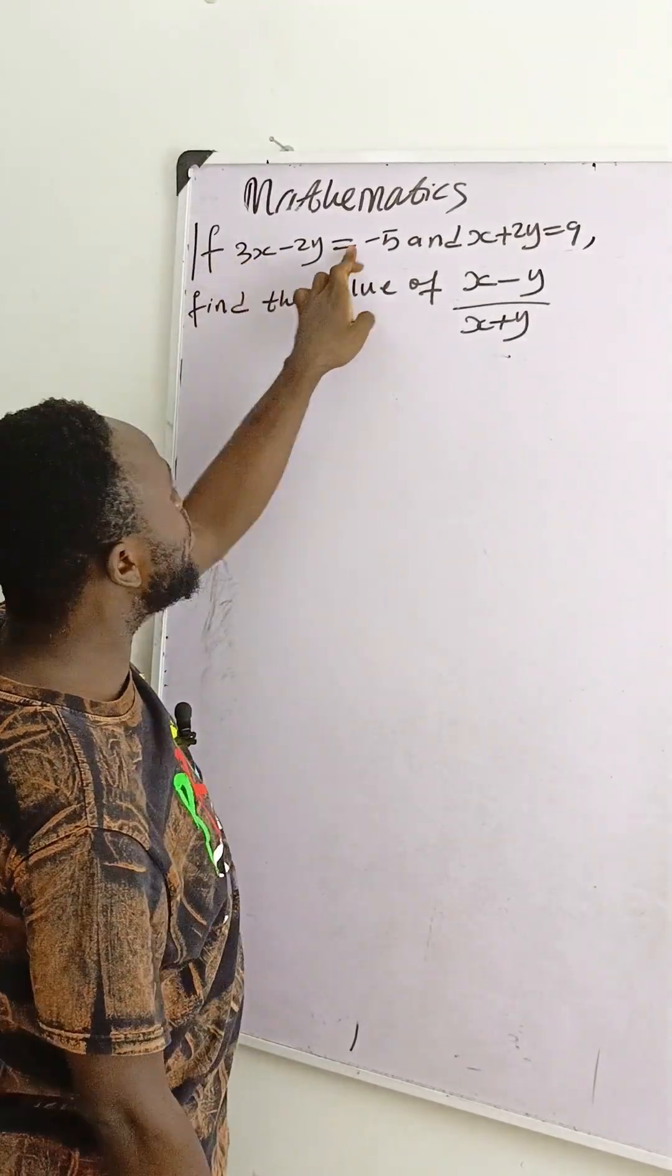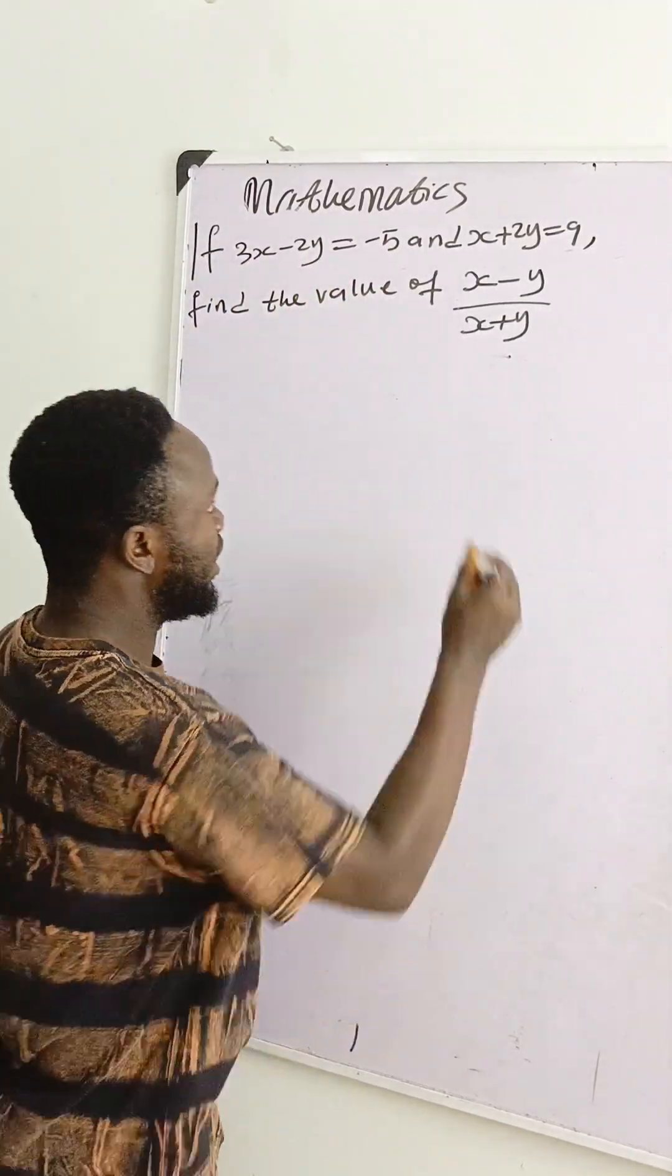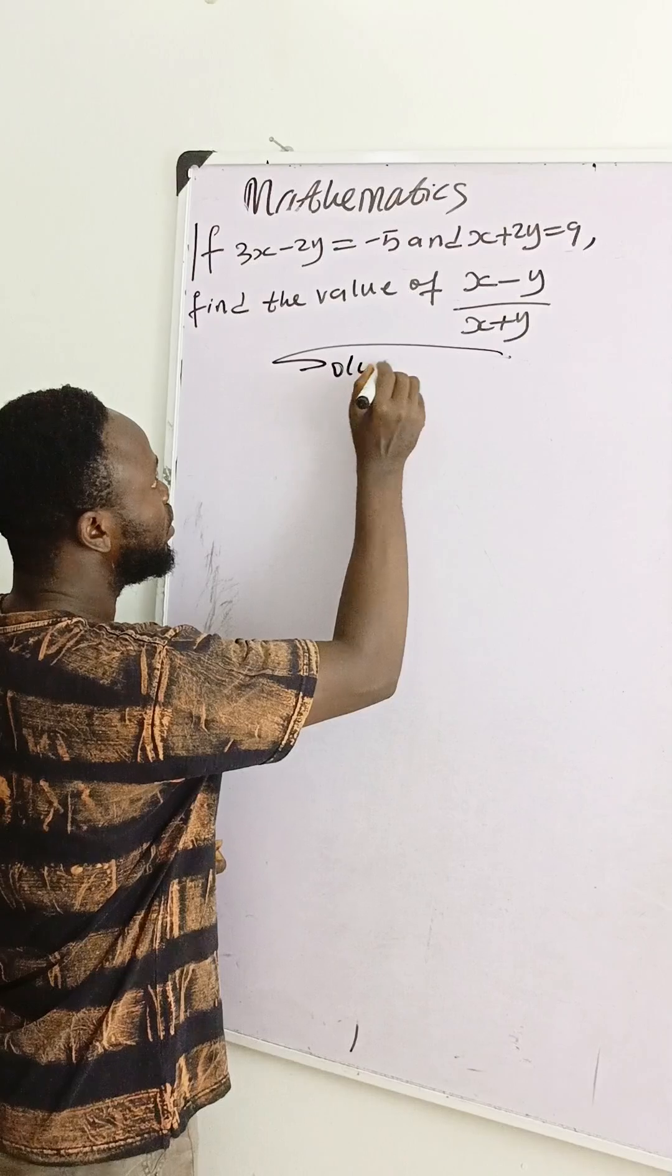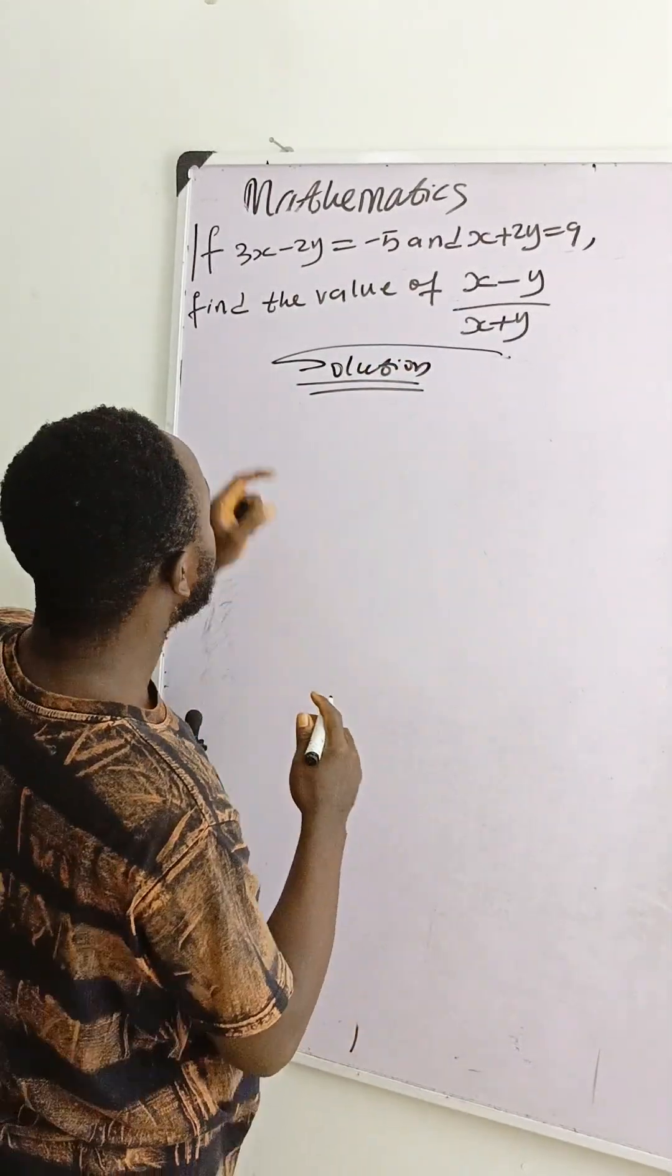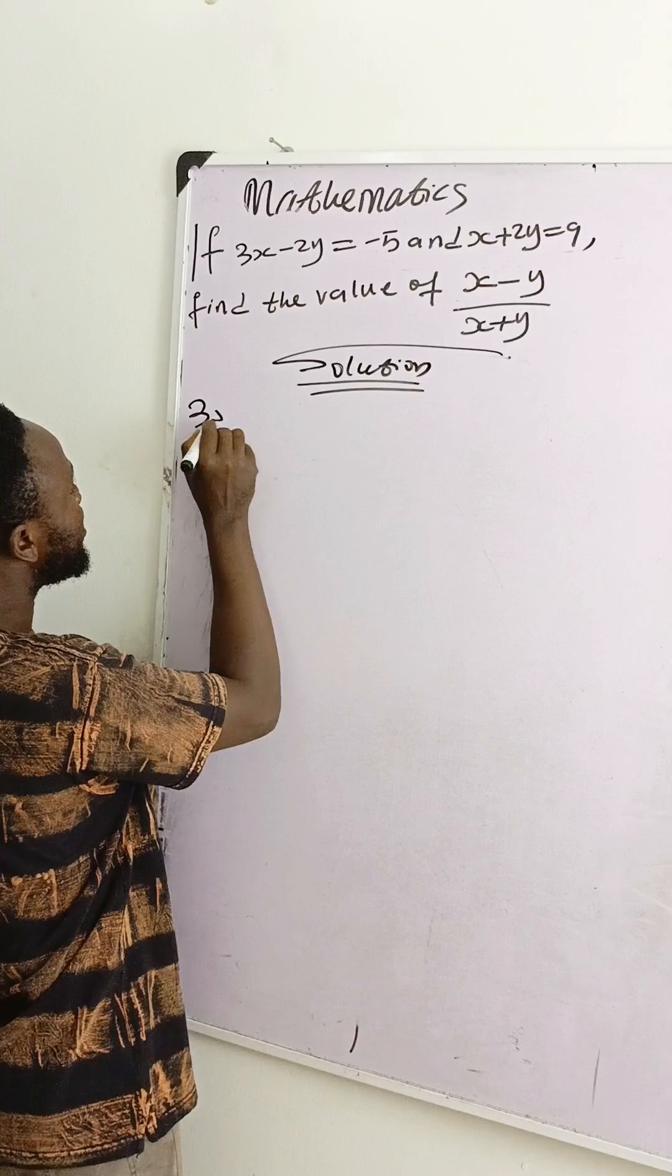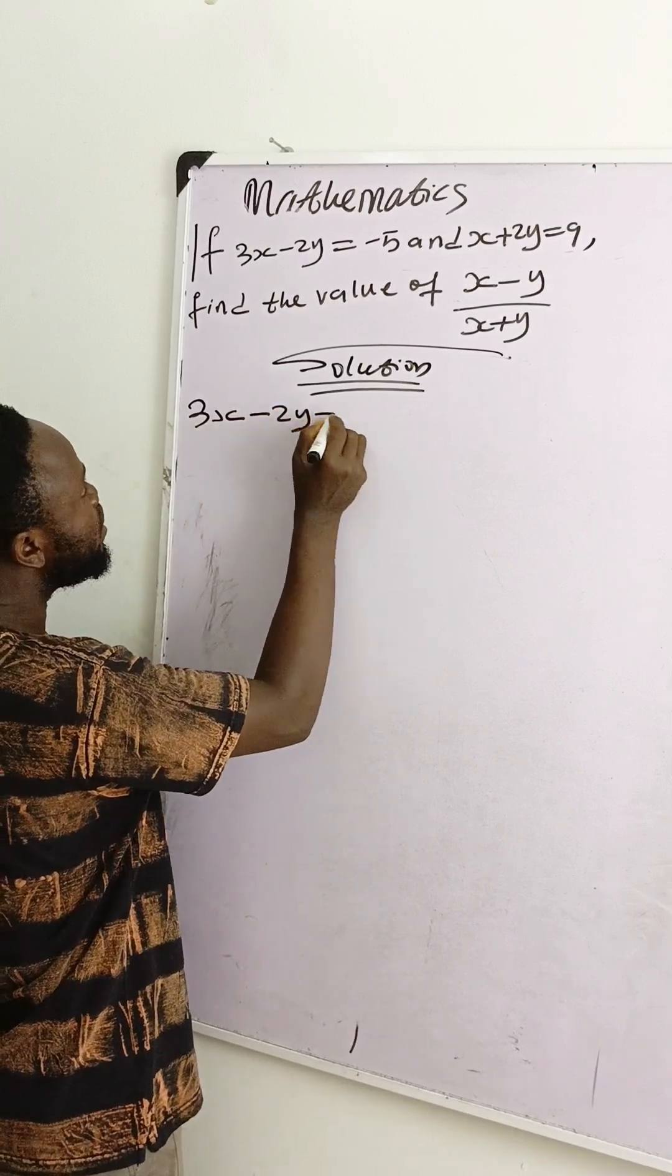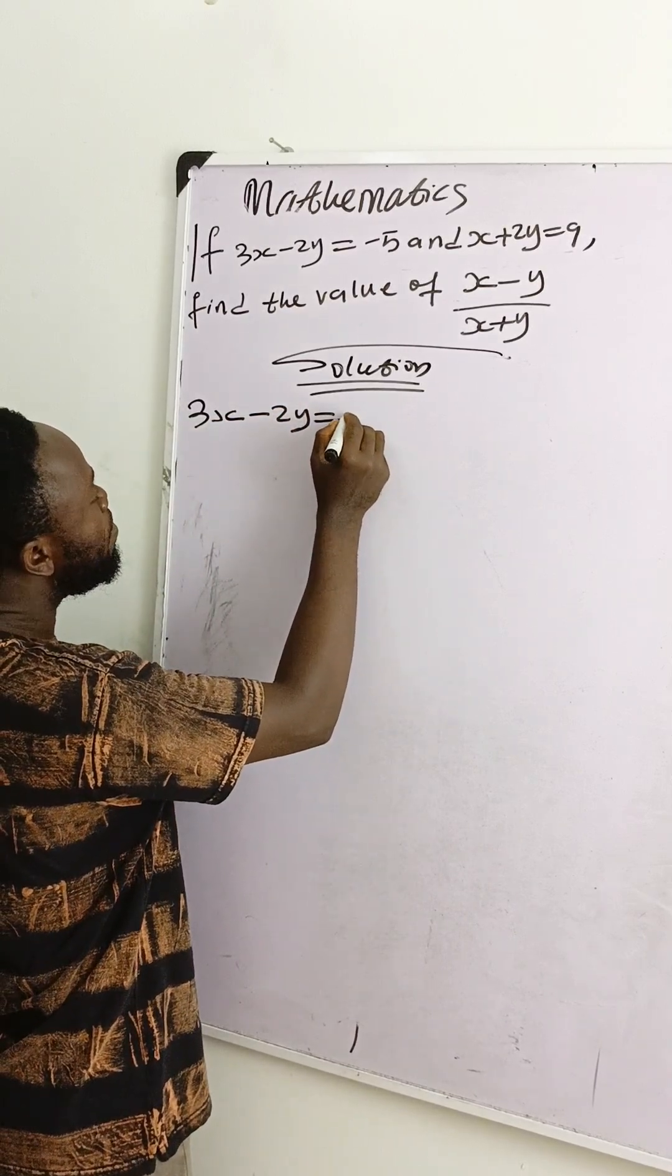If 3x minus 2y is equal to minus 5, let's write solution. Pay attention and see what I will do here. The question said, if 3x minus 2y is equal to minus 5.